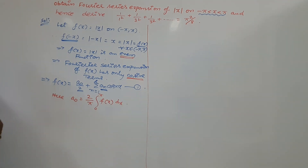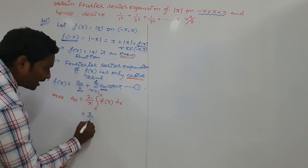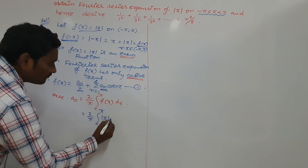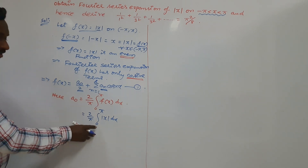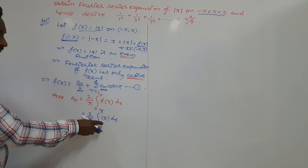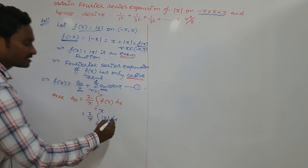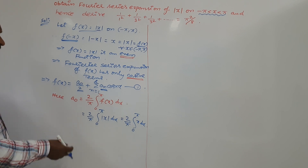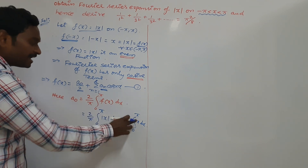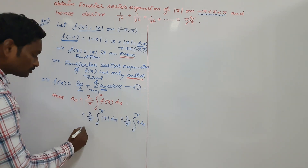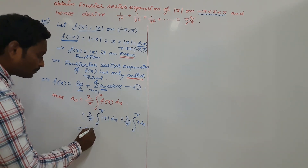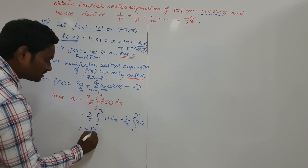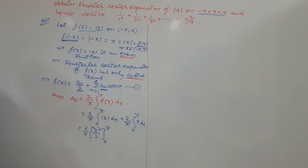Replace the value of f of x: a₀ equals 2 by pi times the integral from 0 to pi of modulus of x dx. Here, the range of x is 0 to pi. If x is 0 to pi, then modulus of x is simply x. So it is enough to write the integration of x: 2 by pi times the integral from 0 to pi of x dx, which gives x square by 2 within the limits 0 to pi.